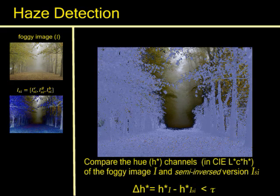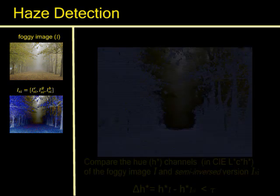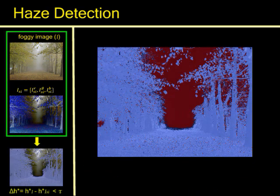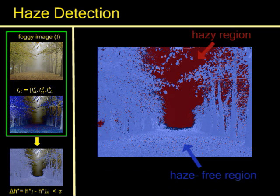Next, based on the U-disparity between the original image and its semi-inverse, we are then able to identify hazy regions on a per pixel basis with good accuracy.